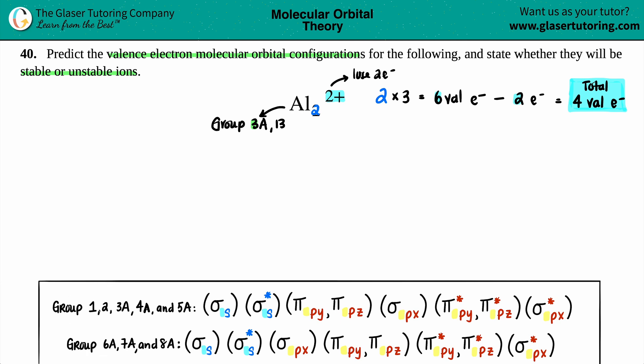So if you have an element that's in group 1, 2, 3, 4, or 5, 3A, 4A, or 5A, you will be following this molecular orbital configuration. For all the other groups, 6, 7, and 8, aka 6A, 7A, and 8A, you'll follow the one at the bottom. But since we just said that we are in group 3A, we are going to use the top one.